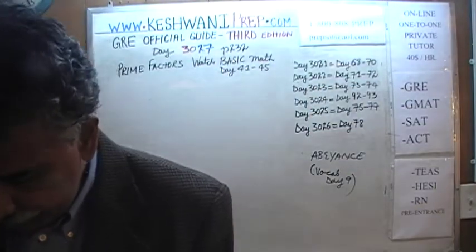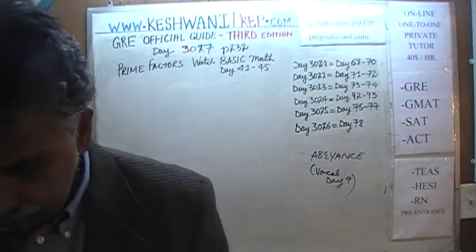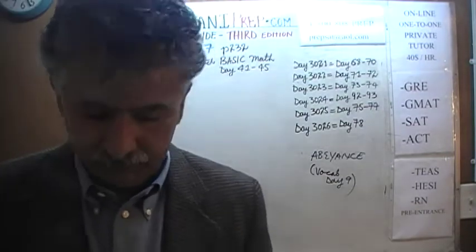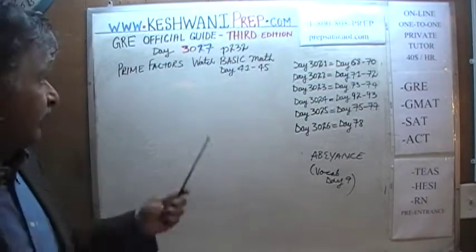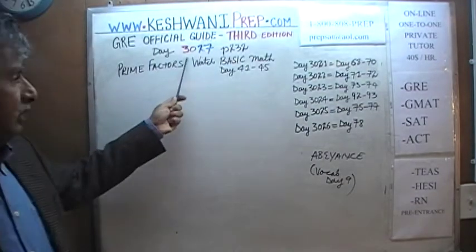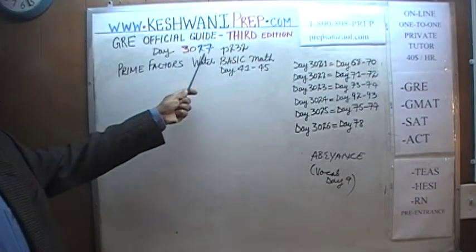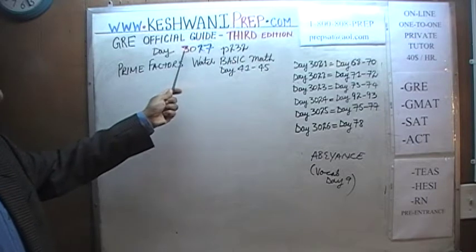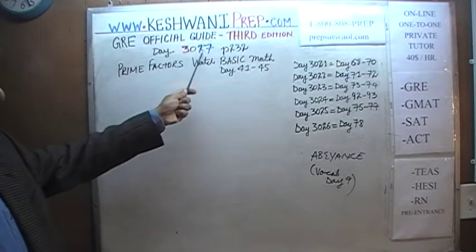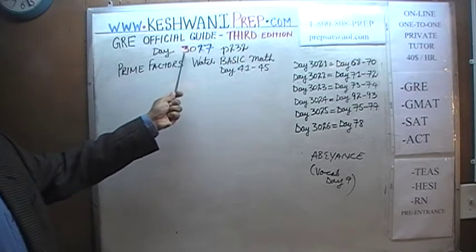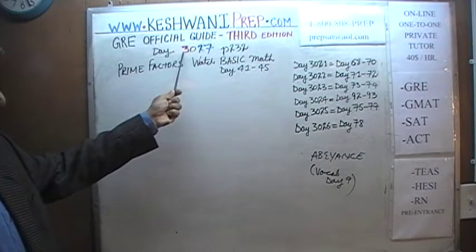Today is our lesson number 27, third edition, day 27 — labeled 3027, where the 3 signifies that we are in the third edition.